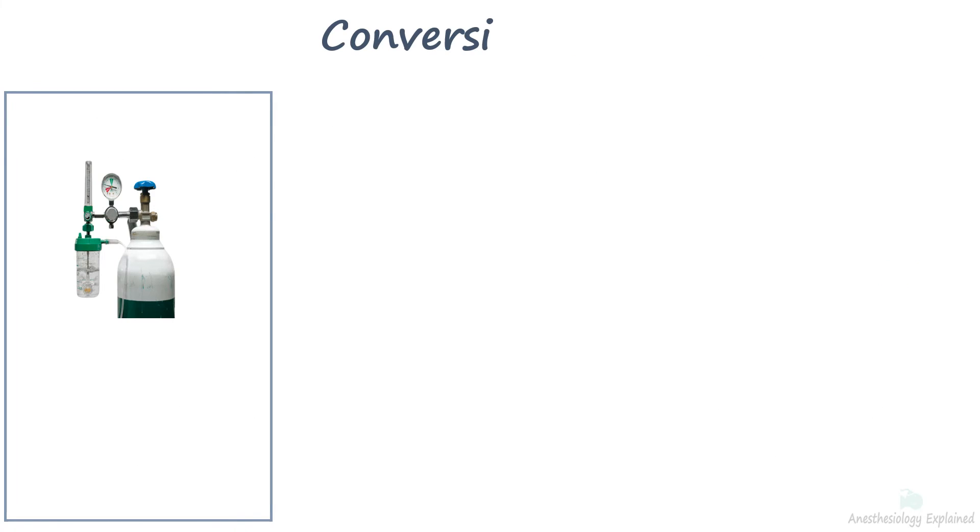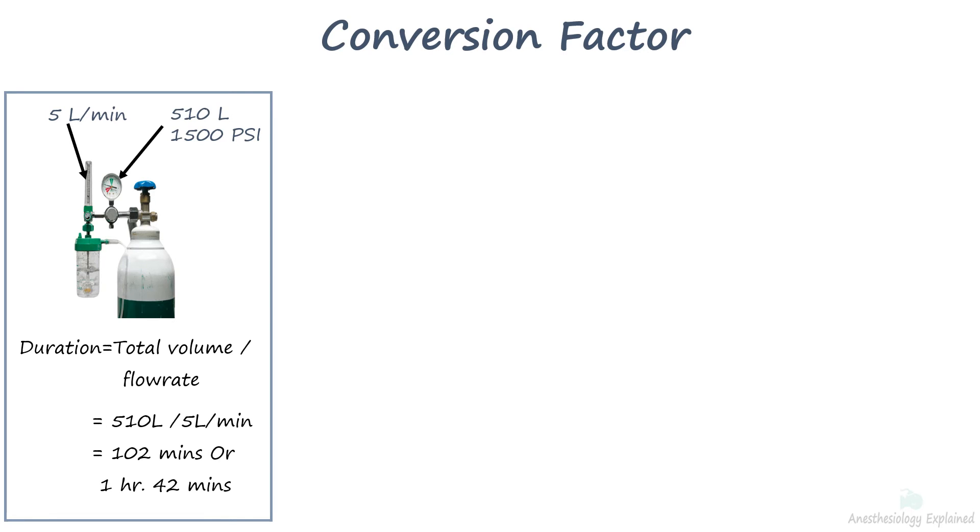In the earlier slide, we calculated 510 liters as the amount of oxygen left in the E-type cylinder with the pressure of 1500 psi. From this, we can estimate the duration the cylinder will last. Let's say we are using oxygen at the rate of 5 liters per minute. If we divide total volume by flow rate, we can get the time remaining. 510 divided by 5 is equal to 102 minutes or 1 hour and 42 minutes.